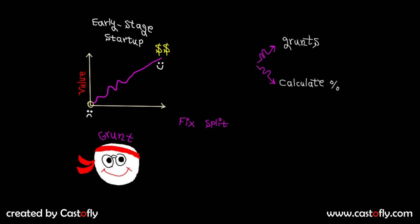The traditional way to do this is to consider a fixed split. Imagine the whole company is represented as a pie. You can split the pie and give a fixed percentage to grunts.